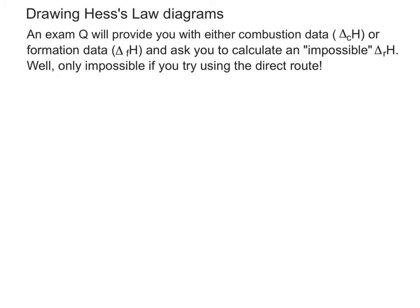So the first one is using combustion data. So this would be an example of an impossible-to-measure change. Taking some carbon and some hydrogen and directly combining them together in the correct ratios to make butane. It's actually a very difficult reaction to do in that particular circumstance. So it's obviously going to be quite difficult to measure its temperature. But it could theoretically happen.